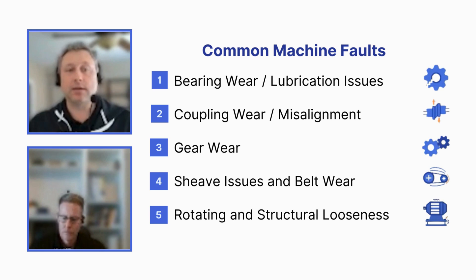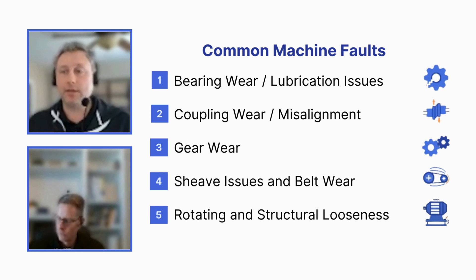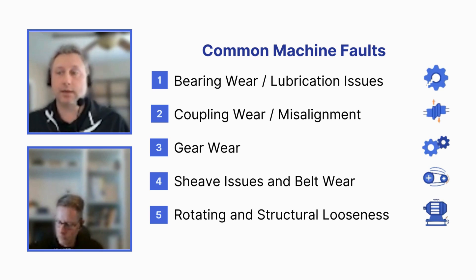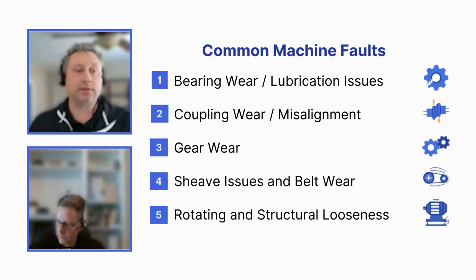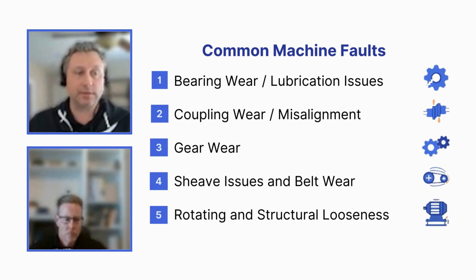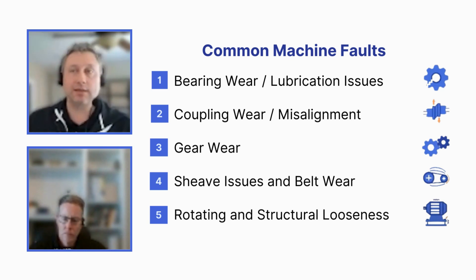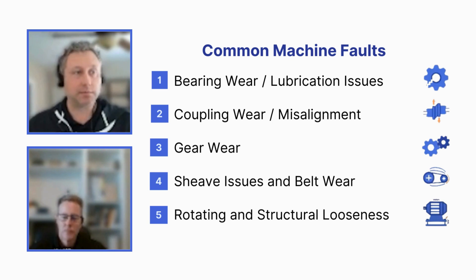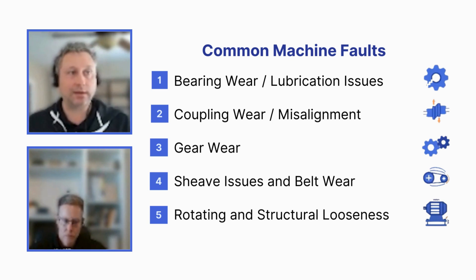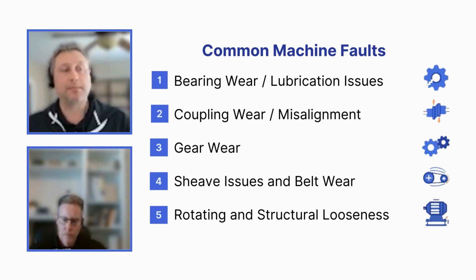In general, gear wear and gear mesh problems are really easy to identify because they end up at very high frequencies — we're talking like 31 times the shaft speed or something like that. It's a very, very high frequency, easy to pick out.